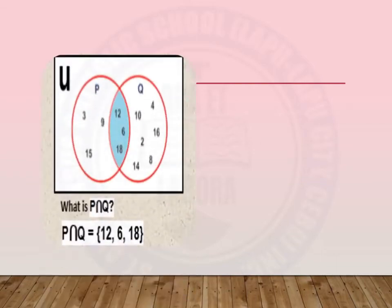Examples. In the given Venn diagram, there are two sets, set P and set Q. We are asked, what is P intersection Q? Intersection means the elements common to both P and Q. Based on the Venn diagram, the elements common to both sets are 12, 6, and 18. So, P intersection Q has elements 12, 6, and 18.